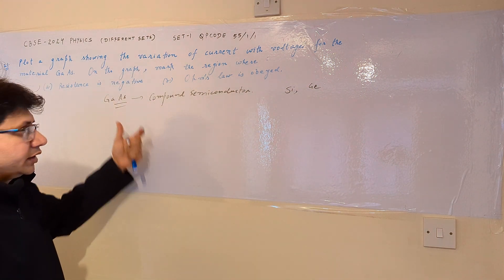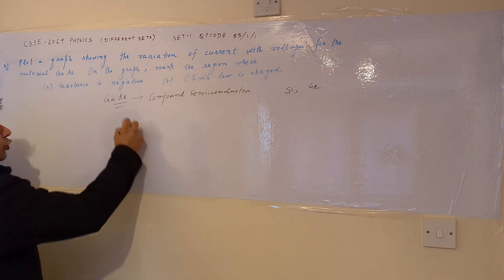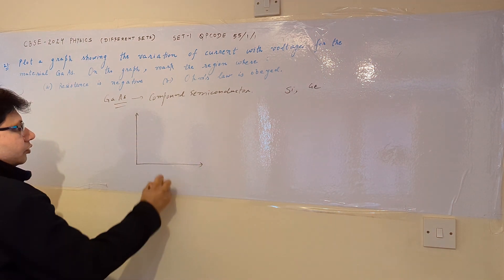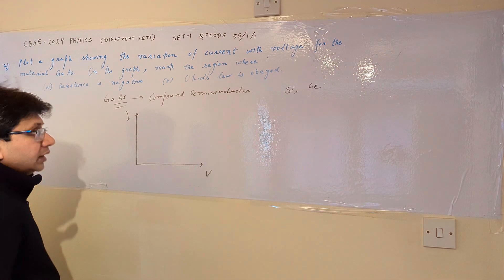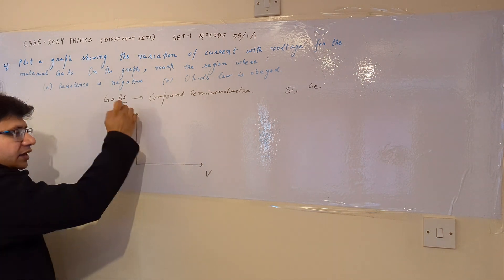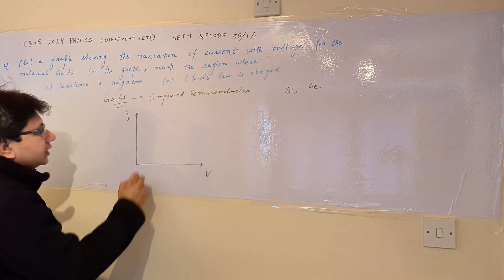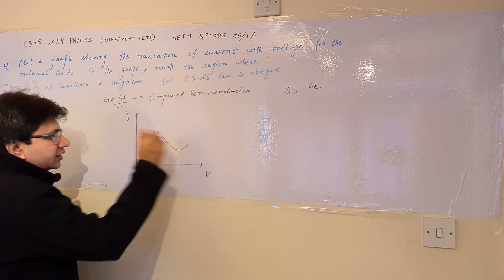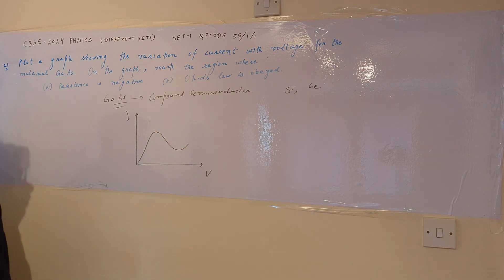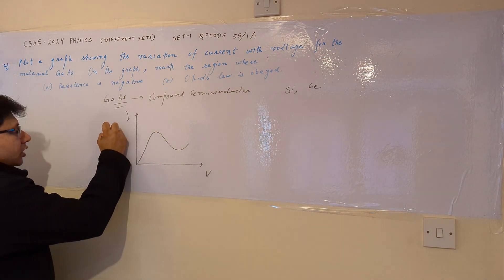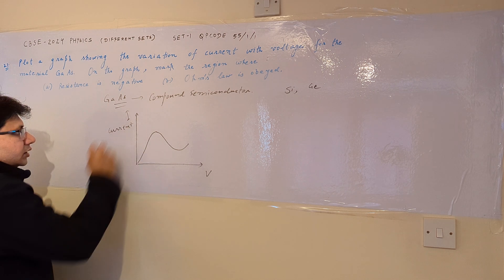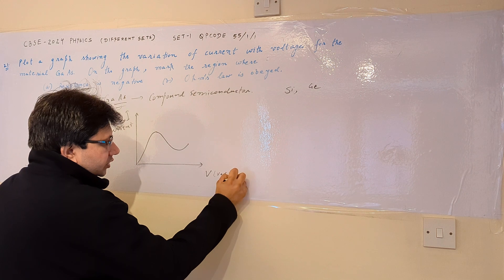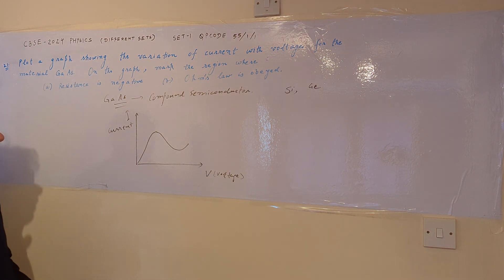For this particular material, if we plot the graph between current and voltage, we take current as the y-axis and voltage as the x-axis. The graph between current and voltage looks like this, with current on the y-axis and voltage on the x-axis.